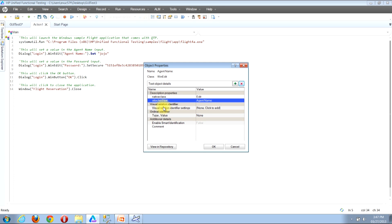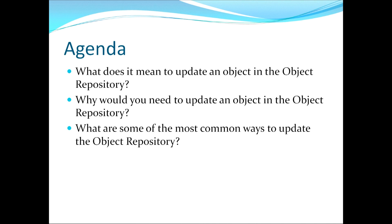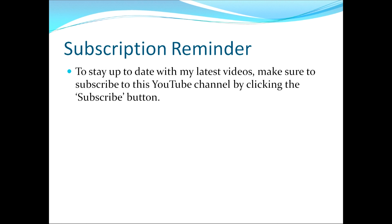I'll click to close the object properties window. This now concludes the video where we've covered the following three topics: first, what does it mean to update an object in the object repository? Second, why would you need to update an object in the object repository? And third, what are some of the most common ways to update the object repository? As a reminder, to stay up to date with my latest videos, make sure to subscribe to this YouTube channel by clicking the subscribe button. Thank you and I hope that you have a great day!